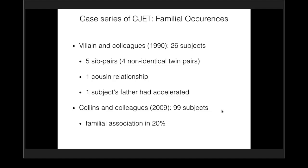Another project is congenital junctional ectopic tachycardia — a rare and uniquely pediatric disorder of infants, where they're born or identified within the first few months to have an acceleration of the junctional pacemaker. Basically the AV node in the center of the heart takes over as pacemaker, resulting in significant tachycardia that then causes secondary tachycardia-induced cardiomyopathy. This has been suspected to be a hereditary condition for many years.